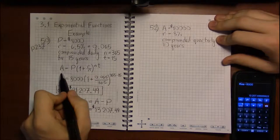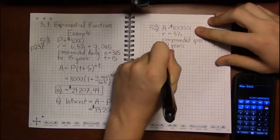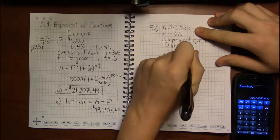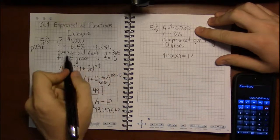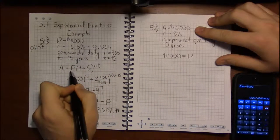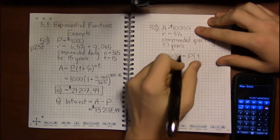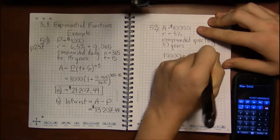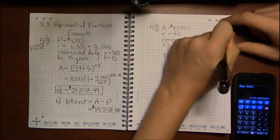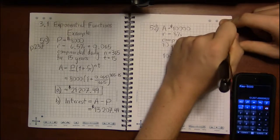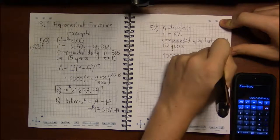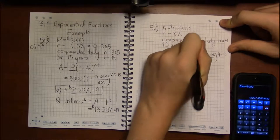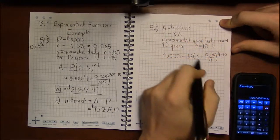So going back to the formula, we now know A. What we're trying to find in this case is how much do we have to initially put into the account? What do we have to put in right now in order to get the goal of $10,000? And if we're compounding quarterly, then that means n is 4. We're compounding 4 times per year. And they told us that we're letting the money sit for 10 years, so that tells us that our variable t is 10.